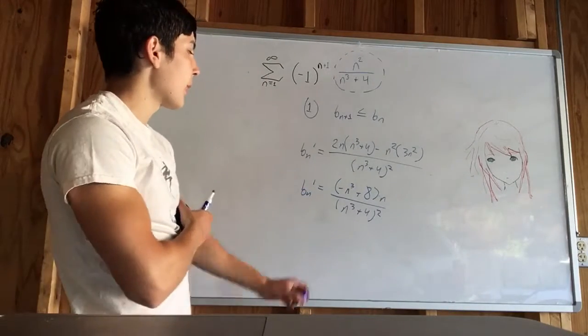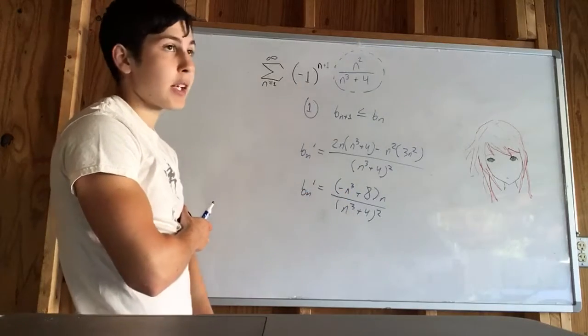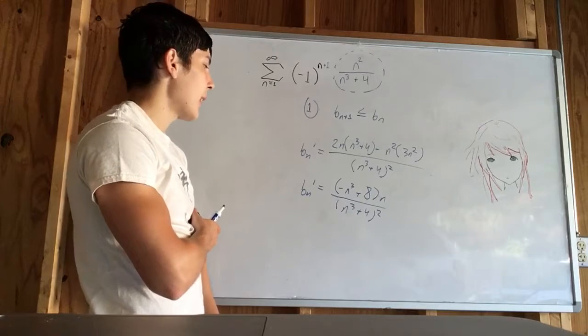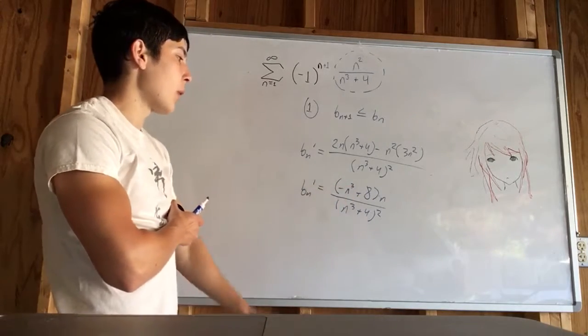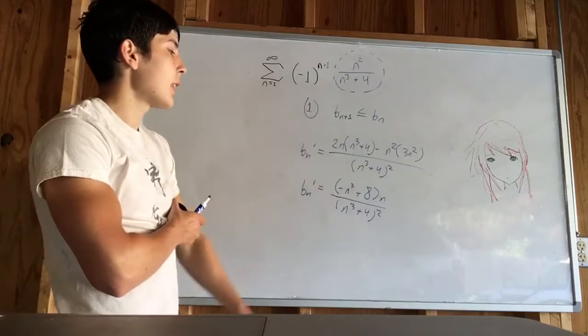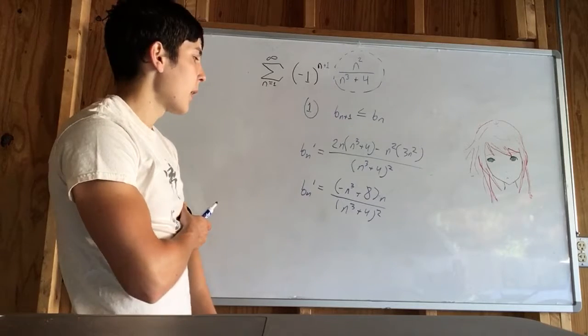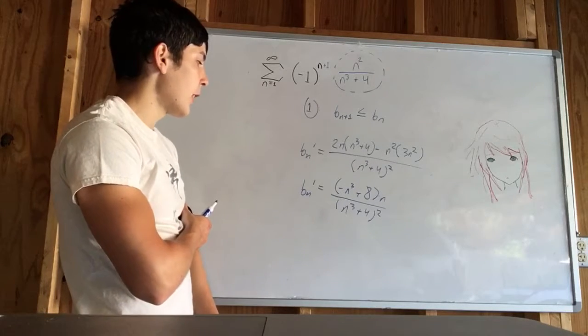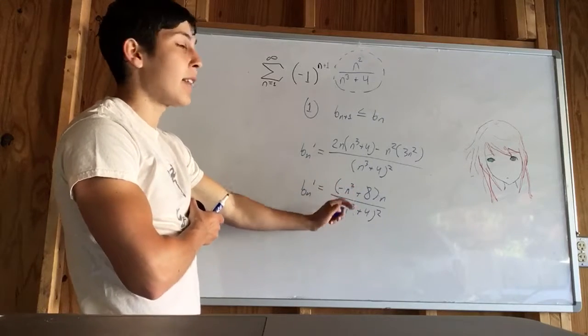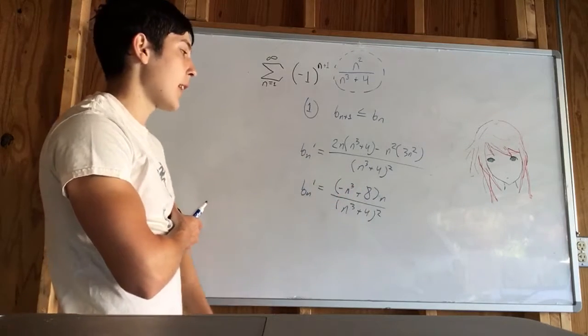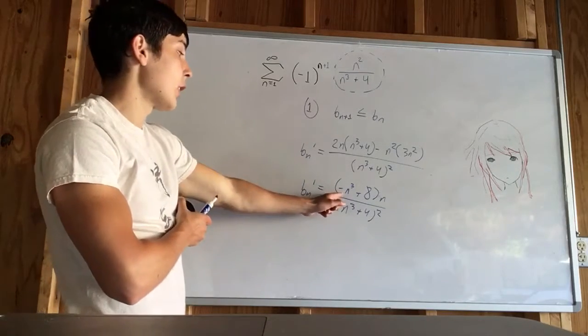So what would happen here? If we plugged in 1, we would get negative 1 plus 8. That would actually be positive. But we can't stop so soon, because if we plug in 2, now we're at 0, because we plug in 2 into here, and then that would give us negative 8 plus 8. That would be 0. And then for every number after that, we would have a negative. Because we plug in 3, now we have negative 27. That's definitely negative. And any number larger than 3 is obviously going to give us even a larger negative.